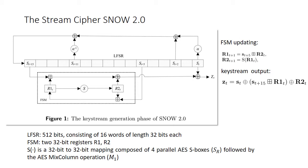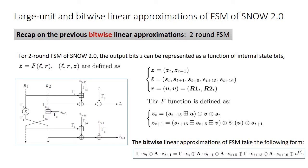This figure shows the keystream generation phase of SNOW 2. SNOW 2 has an LFSR and FSM structure. The FSM consists of two 32-bit registers, namely R1 and R2. The S function is a 32-bit to 32-bit mapping, composed of four parallel AES S-boxes, denoted by SR, followed by the AES MixColumns operation, denoted by M1. We first recap on the previous bitwise linear approximations for the two-round FSM of SNOW 2.